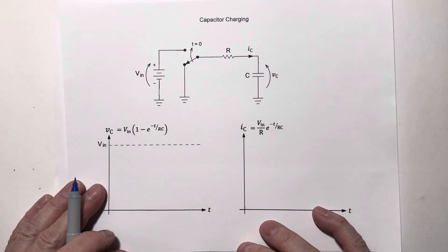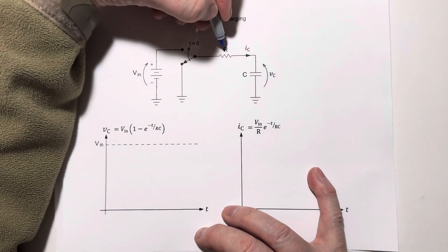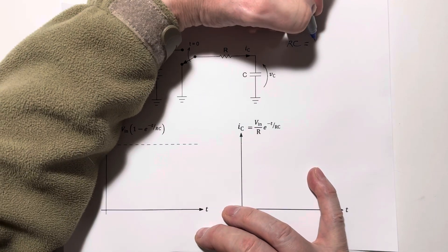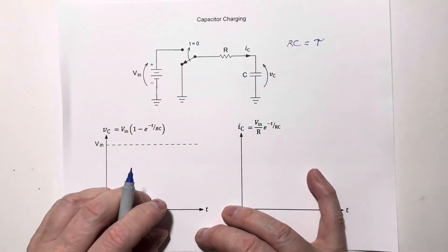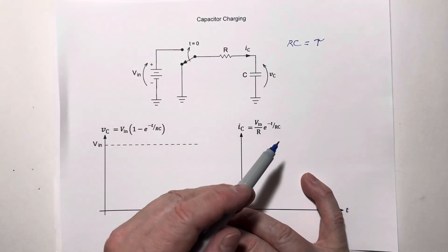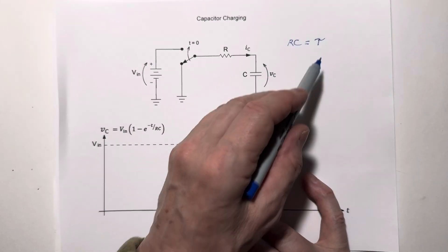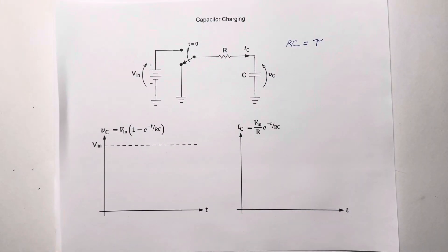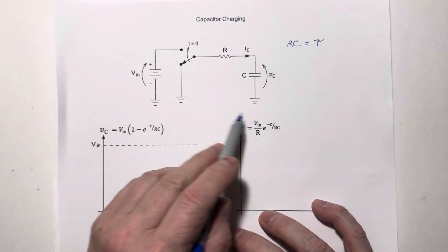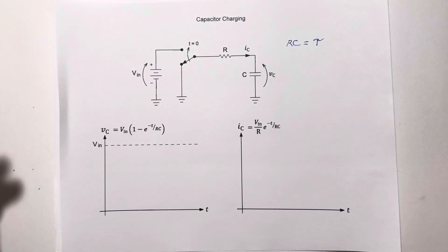One of the fundamental quantities that we're usually interested in is the RC time constant. If we multiply R times C, we call that tau — that is the time constant. Dimensionally, resistance times capacitance is seconds, so this is dimensionally equal to time. The RC time constant is a fundamental quantity relating to this circuit and how fast current and voltage will change over time.